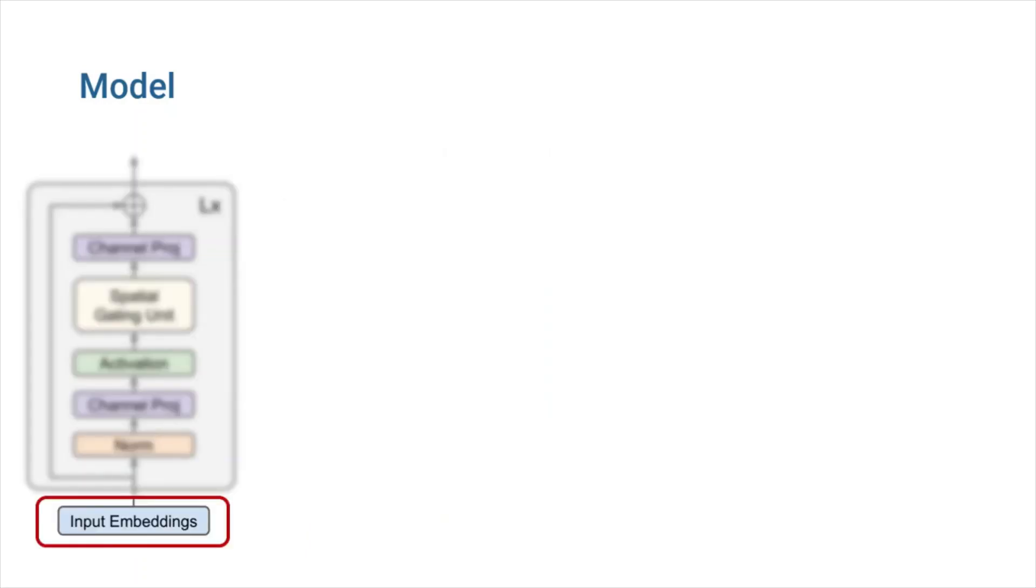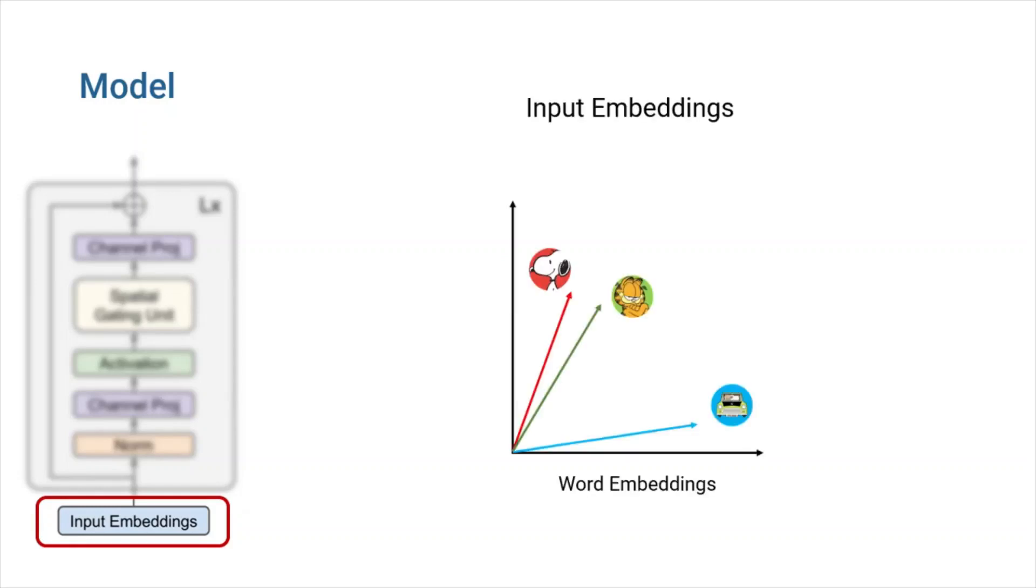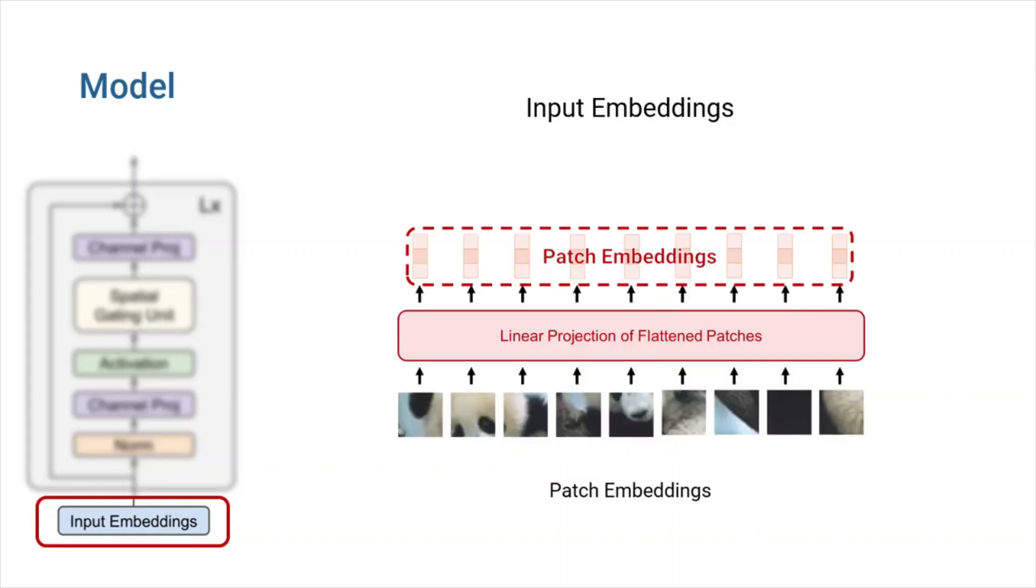First step is converting a raw input to input embeddings. According to authors, this model uses the same input and output protocols of BERT for NLP tasks and vision transformer for computer vision tasks. So, it means that the words are converted to word embeddings and images are turned into patches which are then turned into patch embeddings.